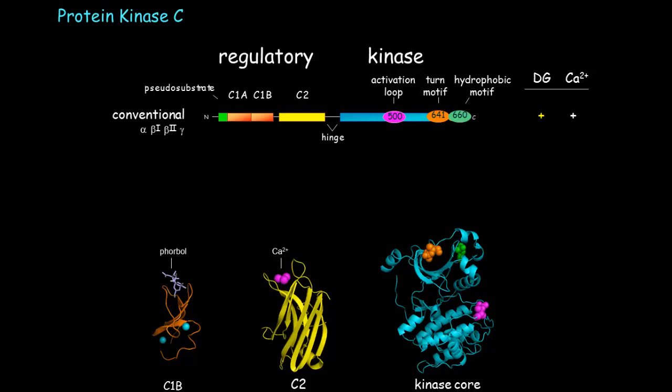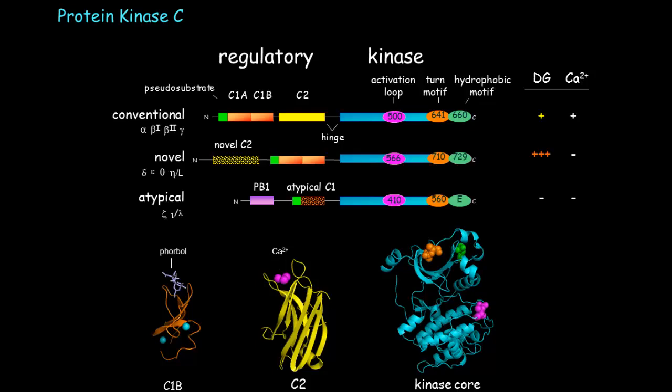They also have, shown in green, a small peptide segment that acts as an autoinhibitory pseudosubstrate segment. The novel protein kinase Cs differ in that their C2 domain does not bind calcium.